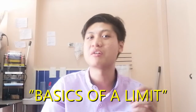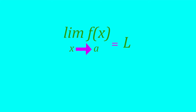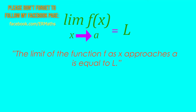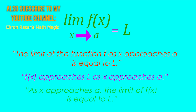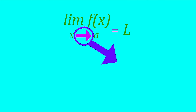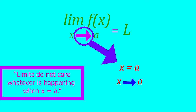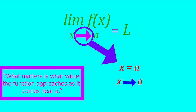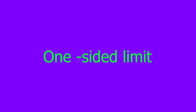The value of a limit exists whenever the actual value of the function is undefined. However, not at all times does the limit exist — there are times where it does not exist. We will first cover the basics. On screen we have the expression of a limit, read as: the limit of the function f as x approaches a is equal to L. It can also be read as 'f of x approaches L as x approaches a,' or 'as x approaches a, the limit of f of x is equal to L.' Notice that instead of x equals a, it becomes x approaches a, represented by an arrow, not an equal sign. Limits do not care about what happens at x equals a — what matters is what value the function approaches as it comes near a.